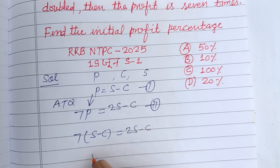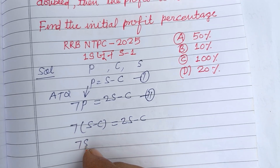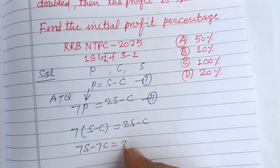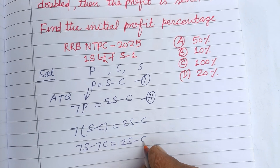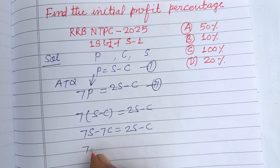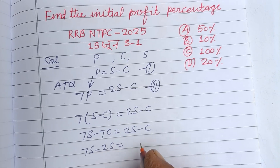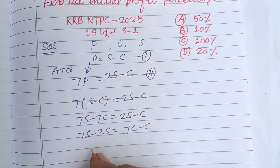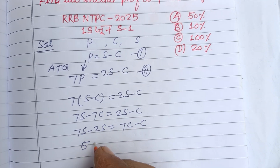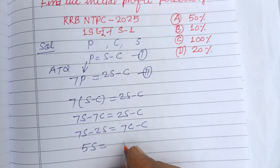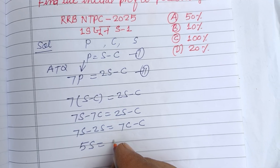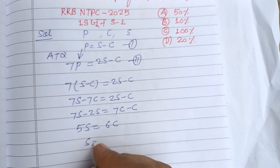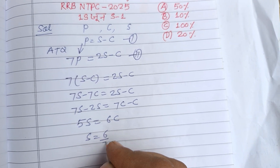Expanding: 2s − c = 7s − 7c. Rearranging: 7s − 2s = 7c − c, which gives 5s = 6c, or s = 6c/5.